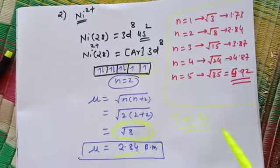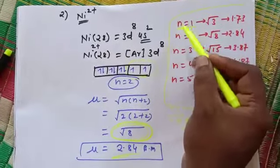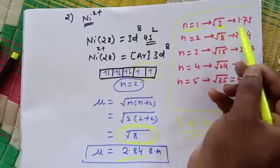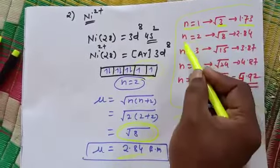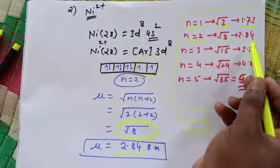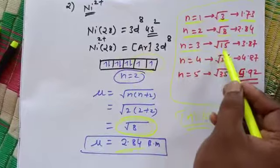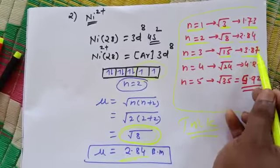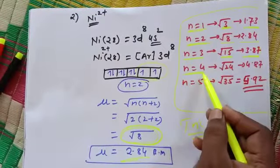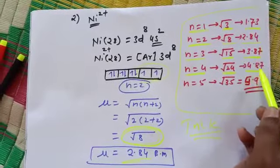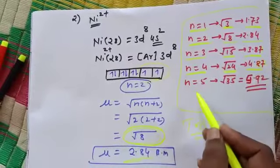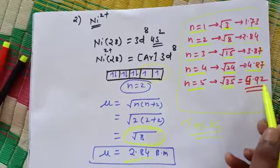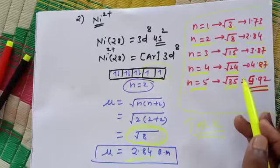Trick: number of unpaired electrons. When n equals 1, then square root of 3, 1.73 BM. When 2 unpaired electrons, square root of 8, 2.84. When 3 unpaired electrons, root 15, that is 3.87 BM. When 4 unpaired electrons, we have root 24, that is 4.87 BM. And when 5 unpaired electrons, root 35, that is 5.92. So this simple trick you have to remember.